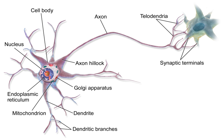Parkinson's disease is characterized by muscle rigidity, tremor, a slowing of physical movement, and in extreme cases, a loss of physical movement. The primary symptoms are the results of decreased stimulation of the motor cortex by the basal ganglia, normally caused by the insufficient formation and action of dopamine, which is produced in the dopaminergic neurons of the brain. Secondary symptoms may include high-level cognitive dysfunction and subtle language problems. PD is both chronic and progressive.